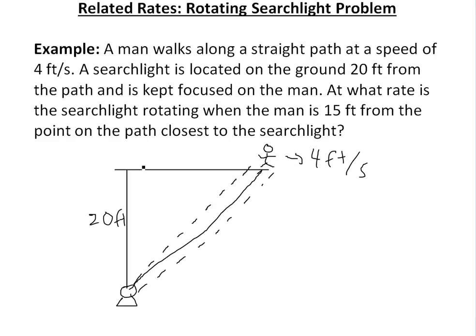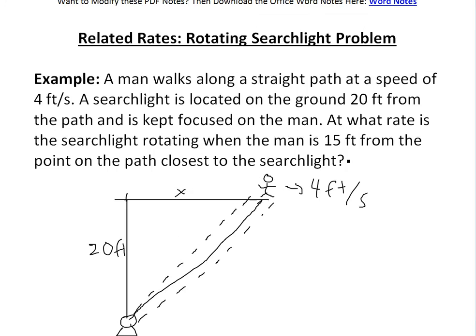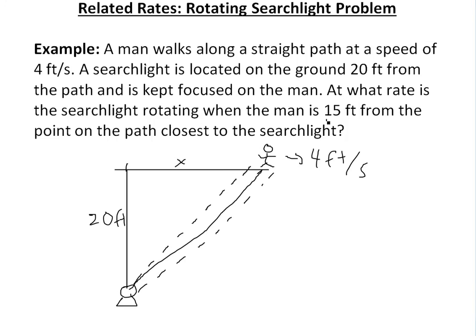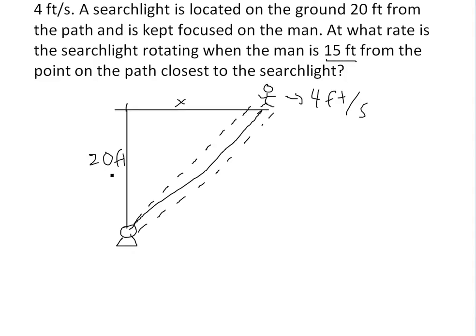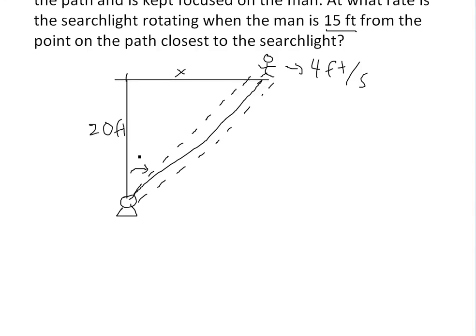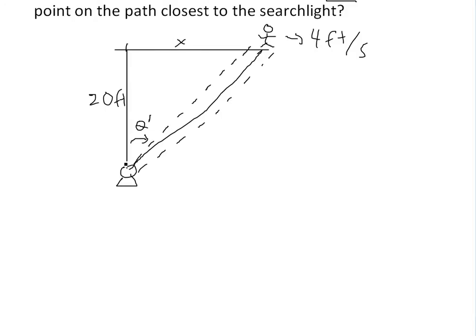Let's call the distance from the searchlight base to where the man is as x. This is going to be changing — he's going to be walking, so it's not always going to be 15 feet, but we're concerned about when it is 15 feet. Basically, it's saying at what rate is the searchlight rotating, so it's obviously going to be rotating because it's focused on him. What we're looking for now is theta prime — theta is the symbol for an angle.